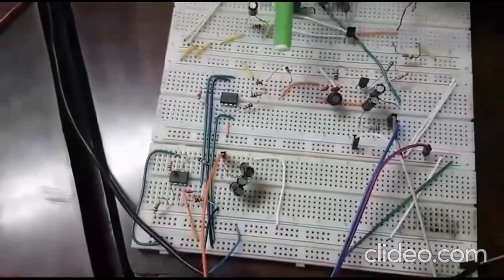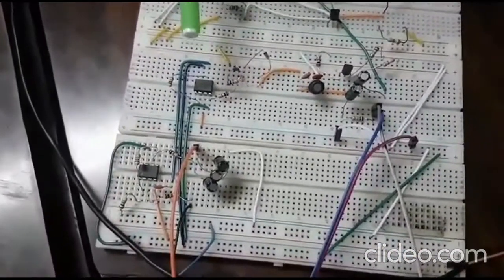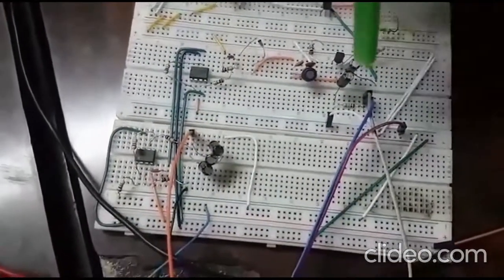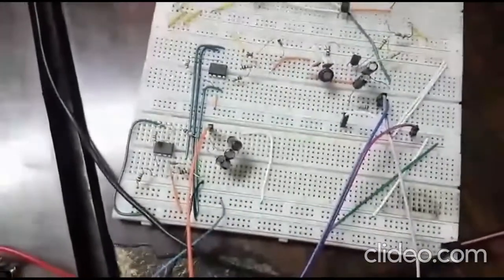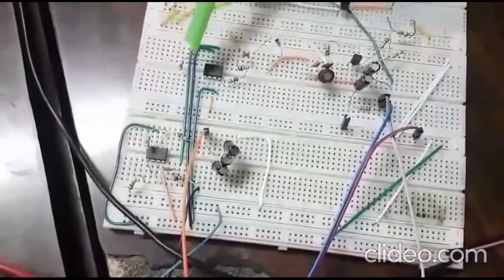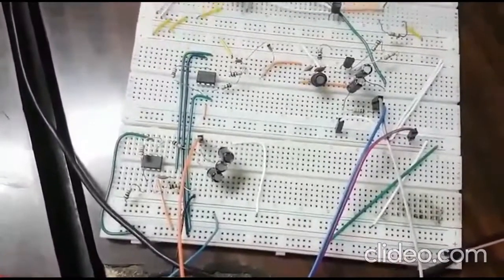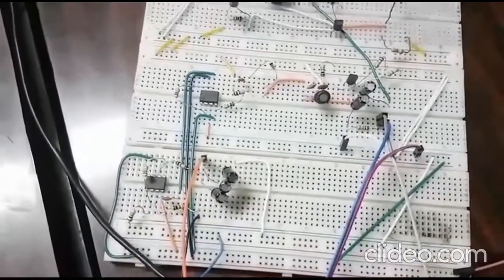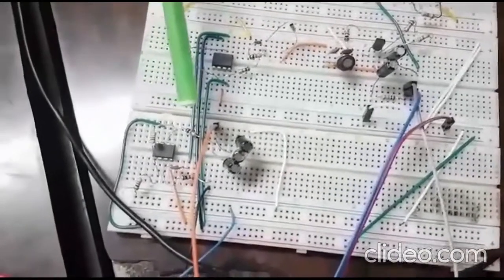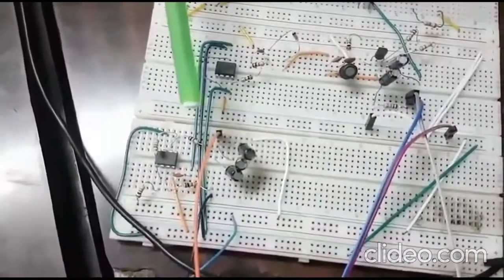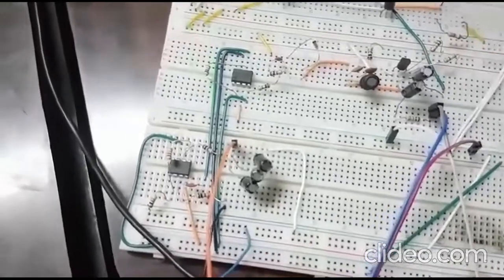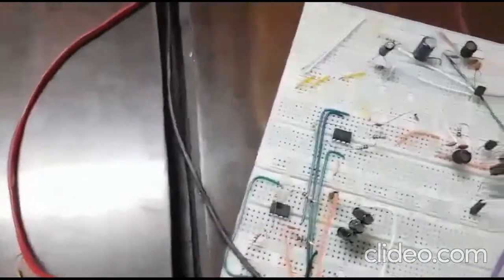So after we demodulated the received message signal using the diode detector, we amplified it to increase the amplitude since during the transmission the amplitude became small. Then there was very small noise in the message signal. So we passed it through a low pass filter here. The low pass filter filtered out the high frequency noises, and thus finally we are supposed to get a clean message signal.